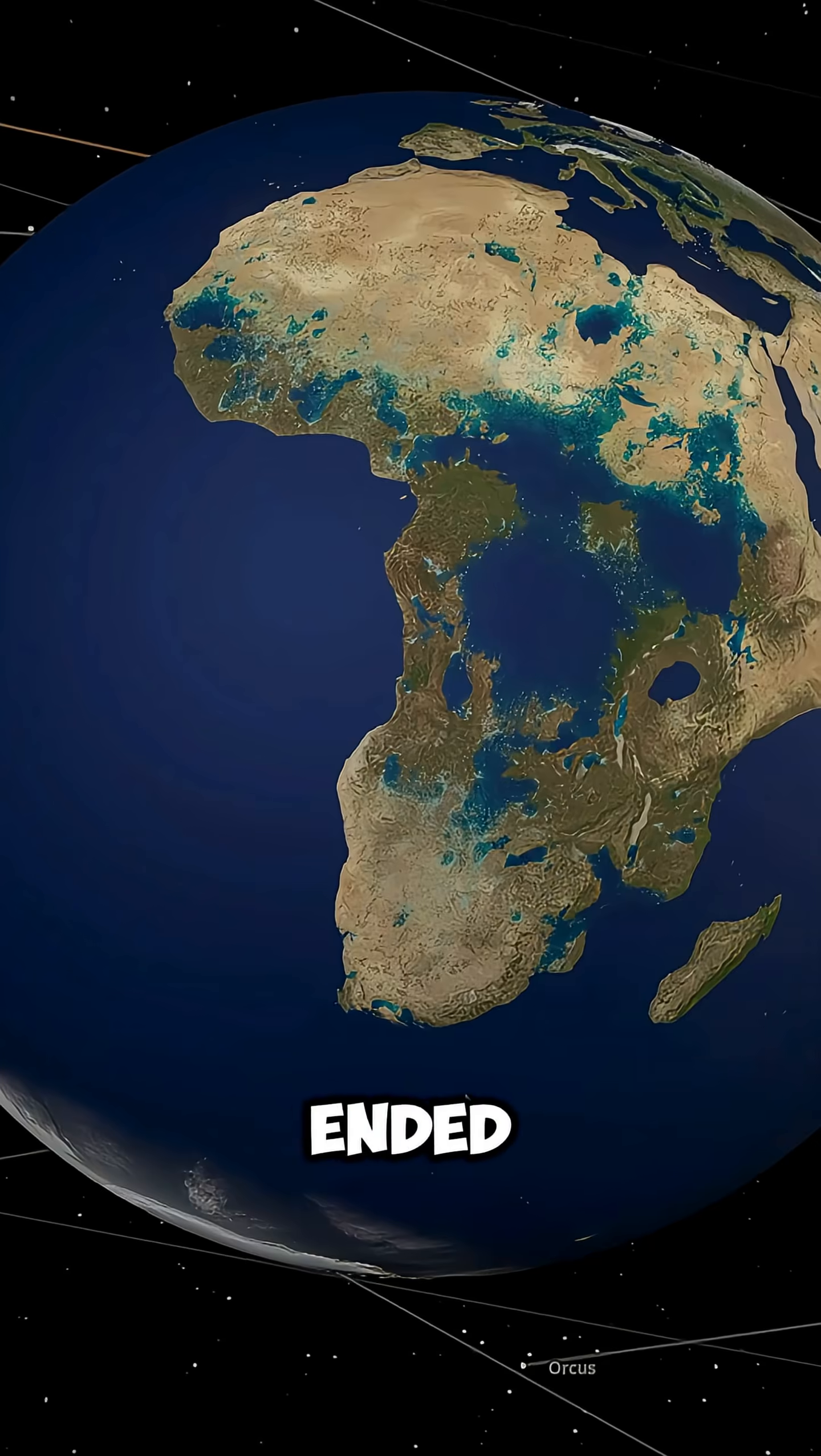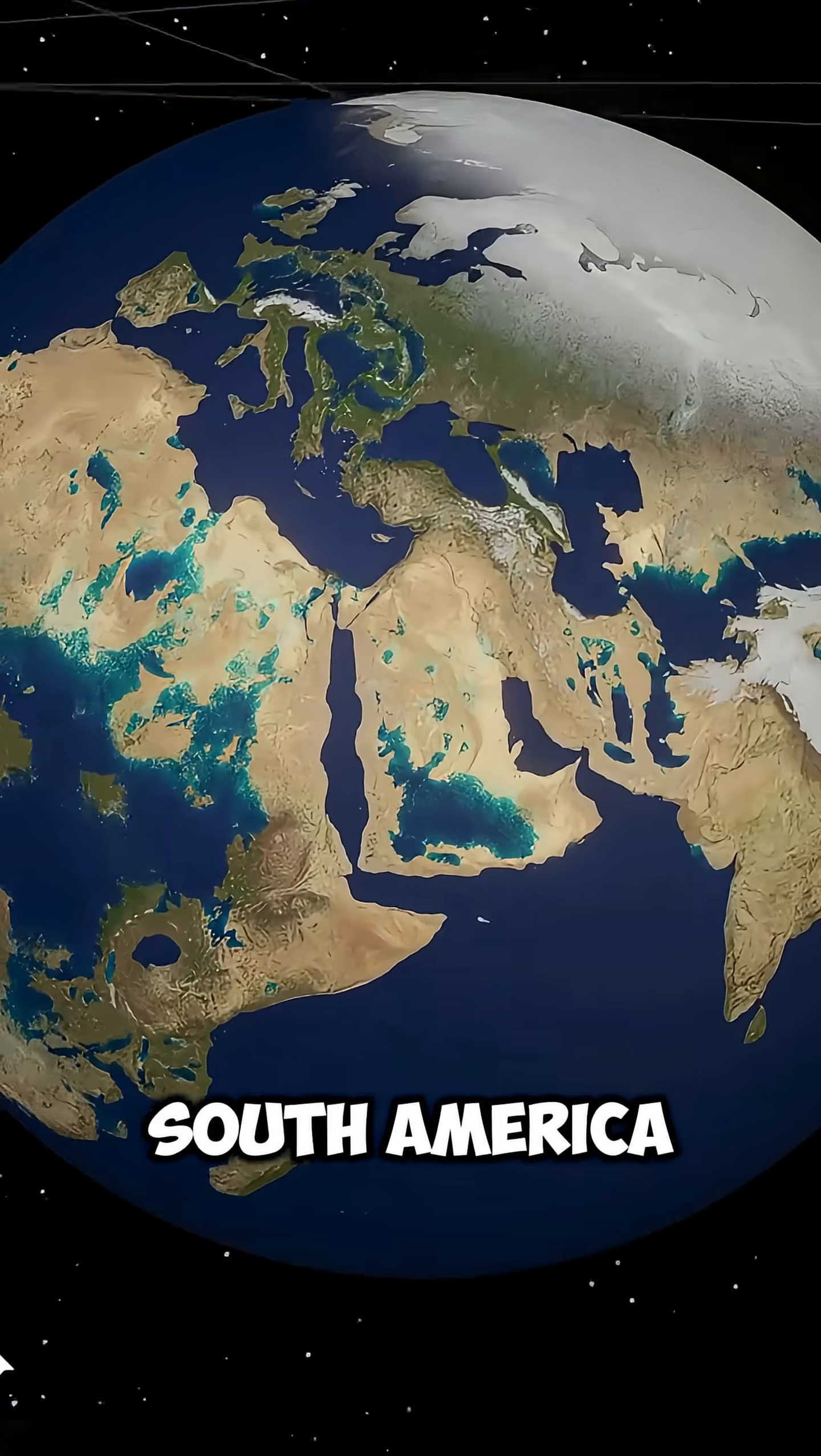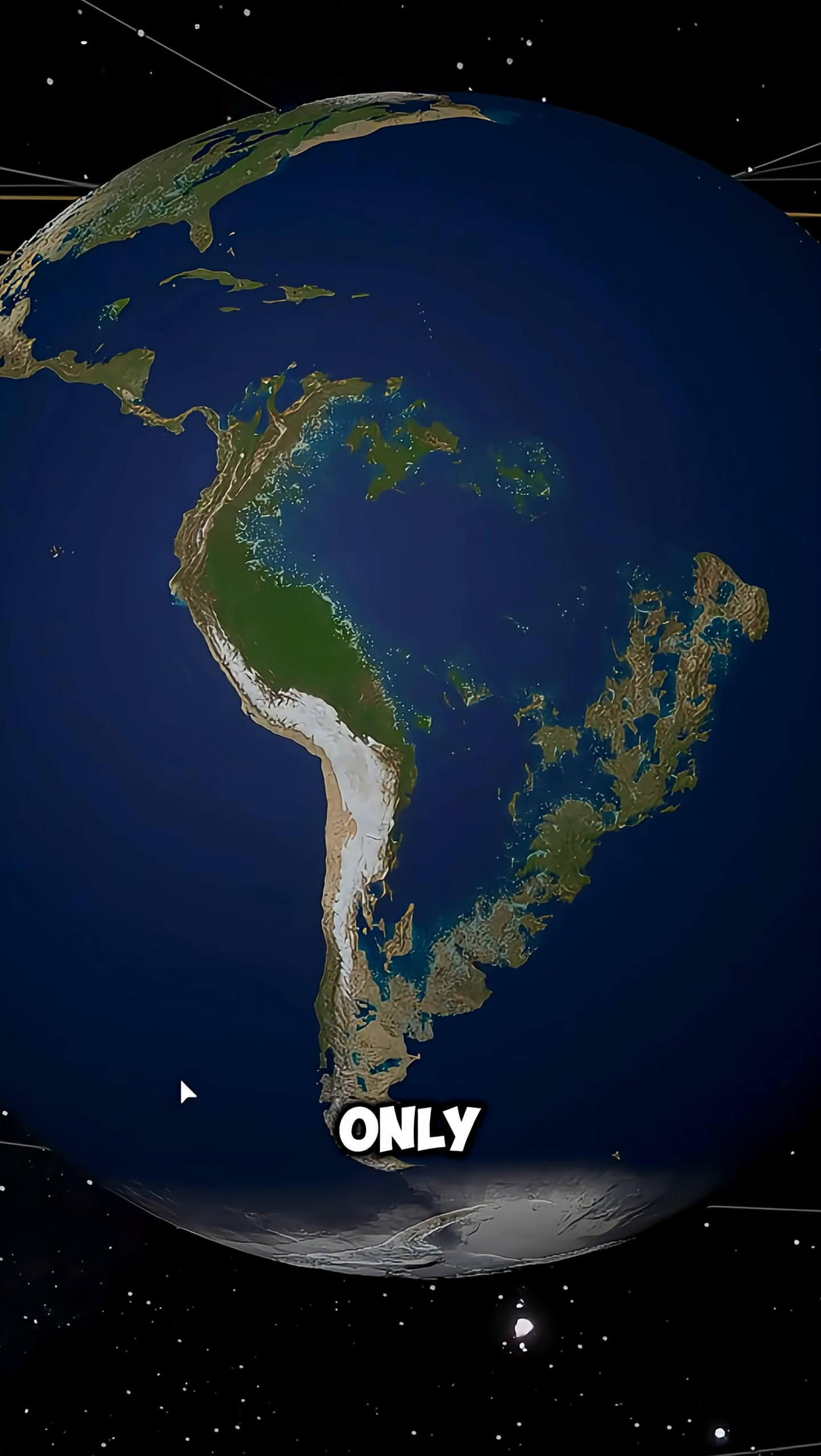However, all that water ended up gathering around the middle of the planet, submerging several countries. For example, South America was flooded in a very short time. But this didn't happen only there.